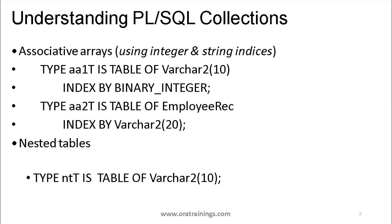In the associative array syntax, if you want to declare a variable of a particular data type, you mention TYPE followed by your variable name, IS TABLE OF — you can mention a record type or a varchar. The key requirement is that you must mention INDEX BY an appropriate integer, because associative arrays require an index to work.